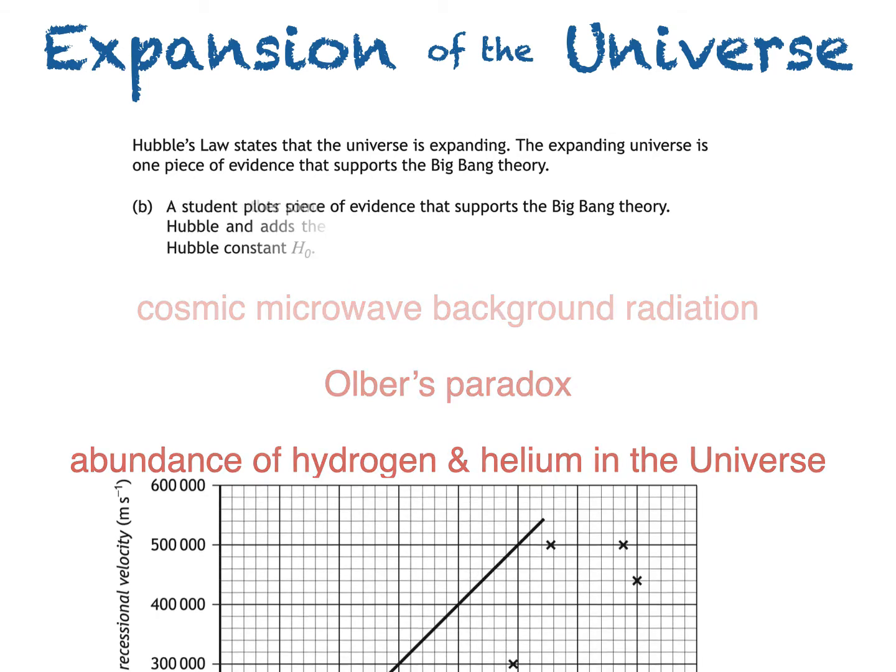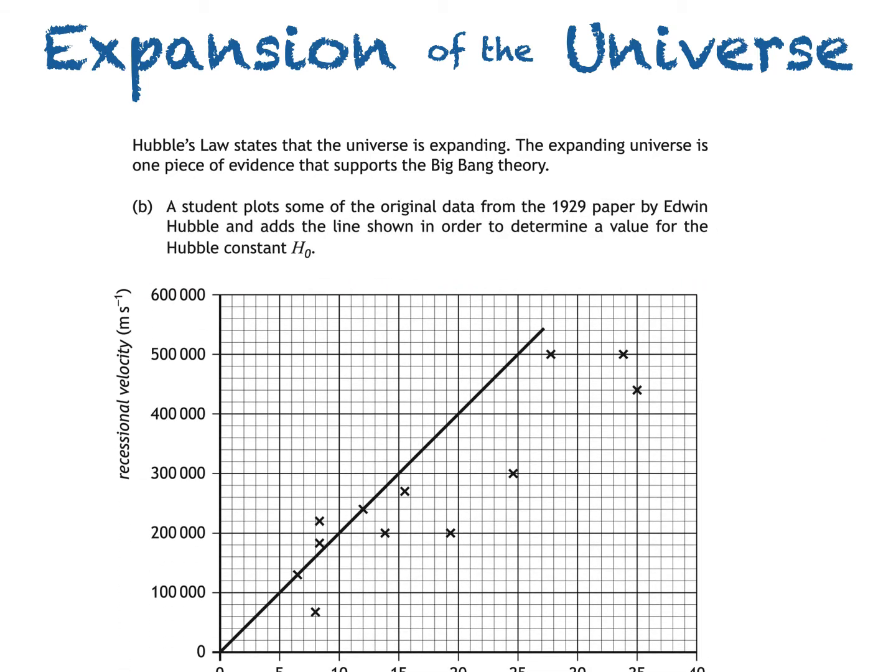Let's take a look at part B of the question. Good news, there's a graph. A student plots some of the original data from the 1929 paper by Edwin Hubble, and adds the line shown in order to determine a value for the Hubble constant, H0.